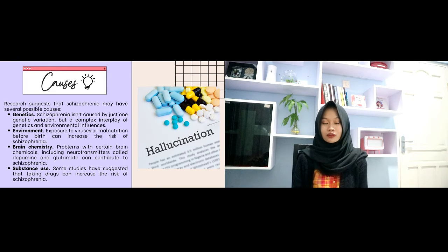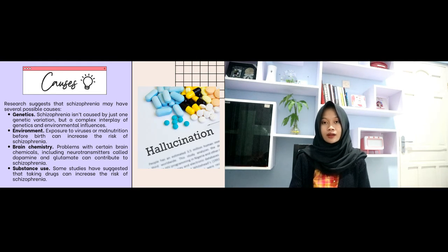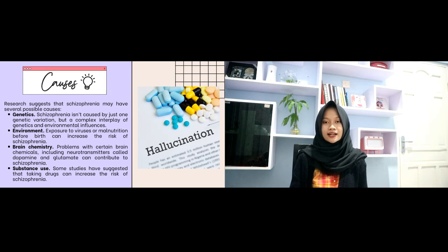Research suggests that schizophrenia might have several possible causes. The first is genetics — schizophrenia isn't caused by just one genetic variation, but a complex interplay of genetic and environmental influences. The second is environment: exposure to viruses or malnutrition before birth can increase the risk. The third is brain chemistry: problems with neurotransmitters called dopamine or glutamate can increase the risk. The fourth is substance use: some studies have shown that taking certain drugs can also increase the risk of schizophrenia.